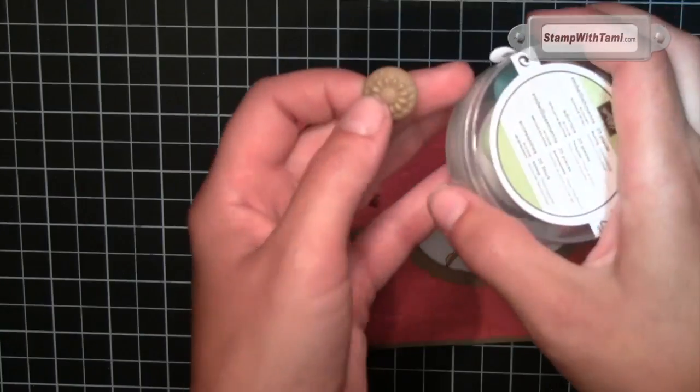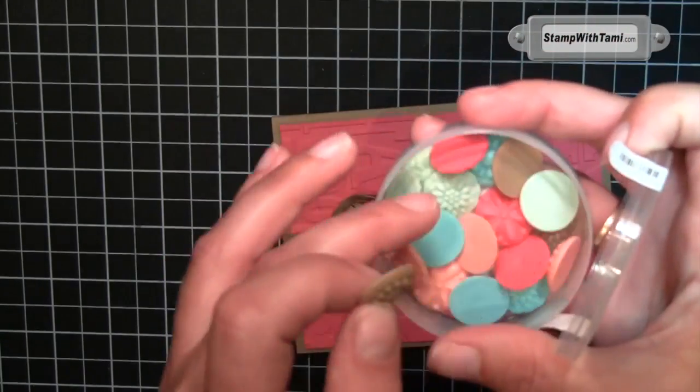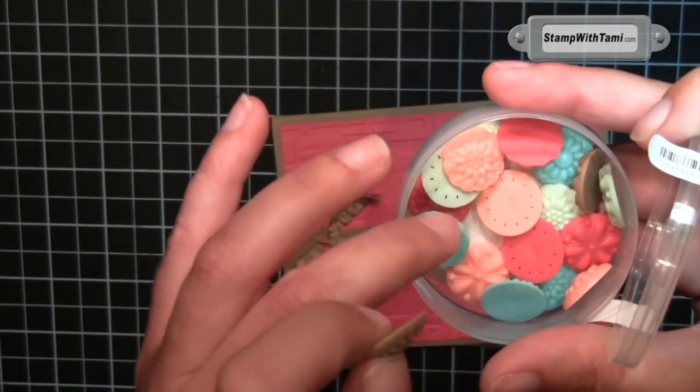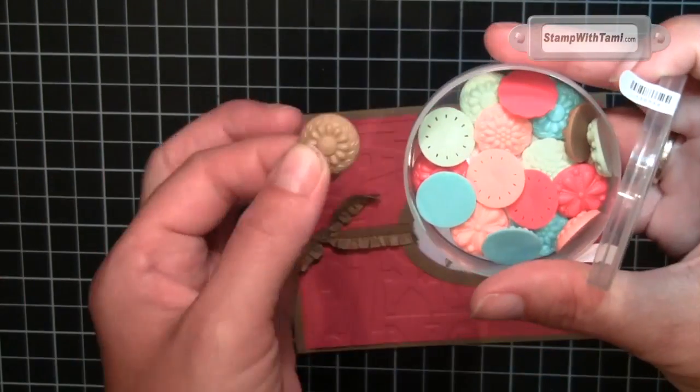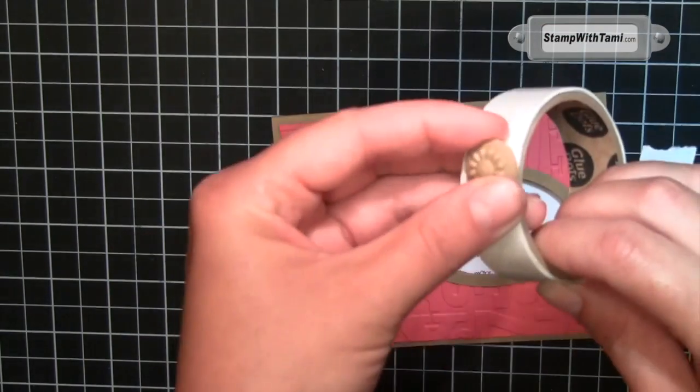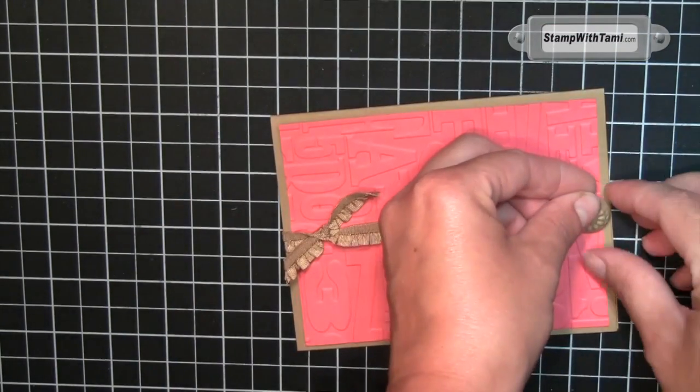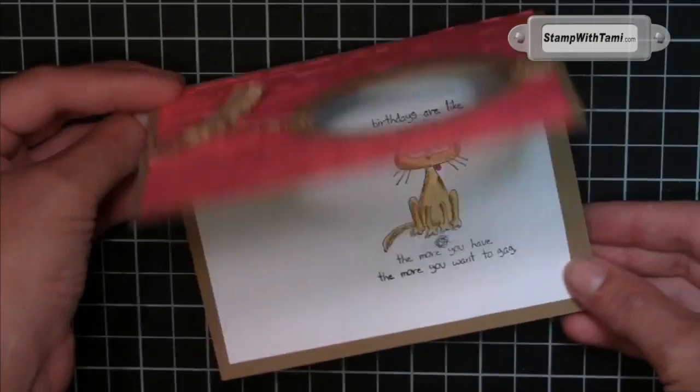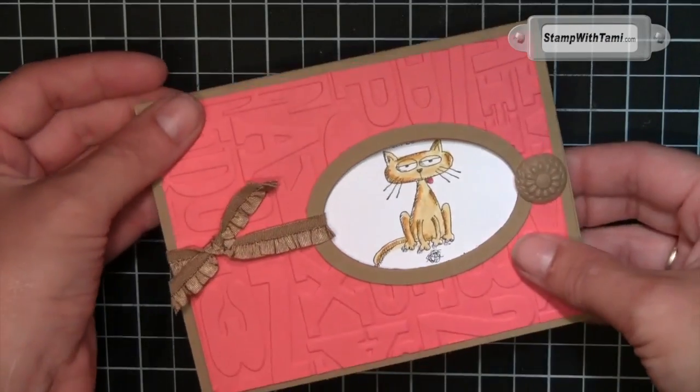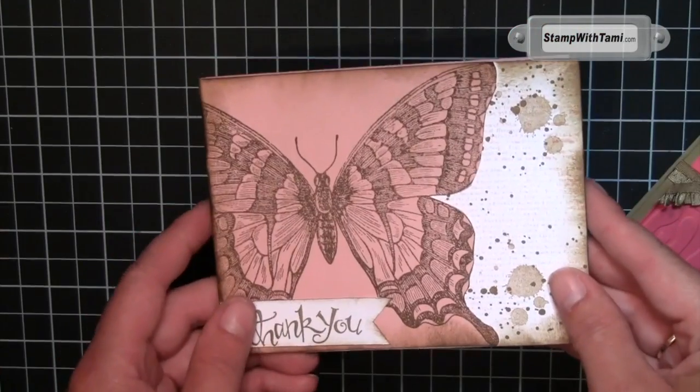These are brand new Boutique Details from Stampin' Up. They come in the new in-color colors—the Strawberry Slush, the Pistachio. Are you salivating yet? Yummy. You can stick them on either with a mini glue dot or Stampin' Dimensionals will work with that too, and your window card is complete and it's so fun.